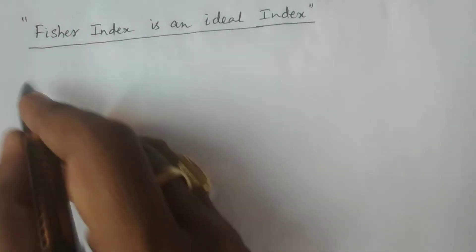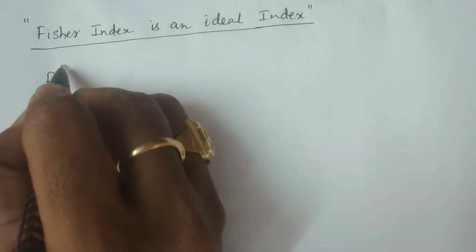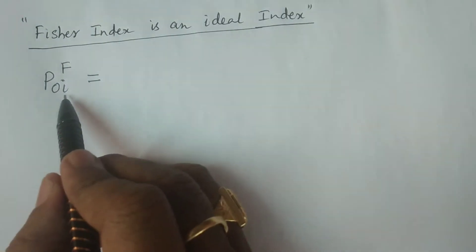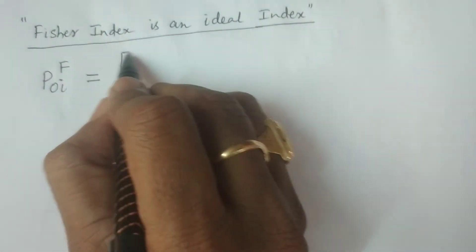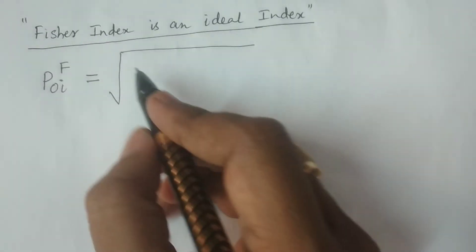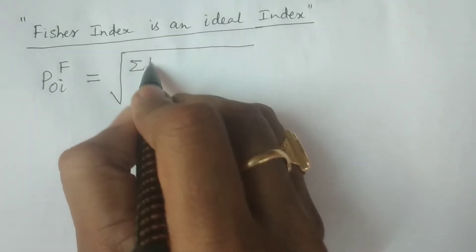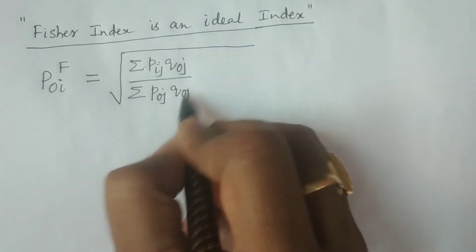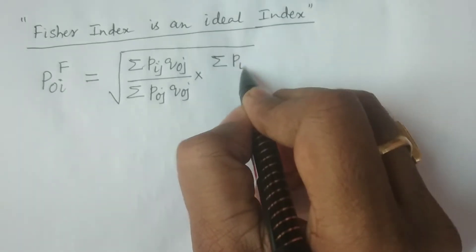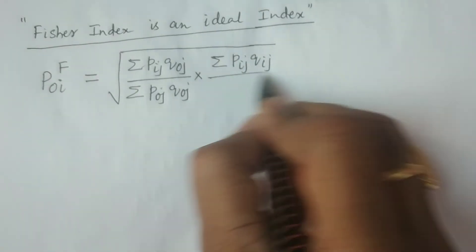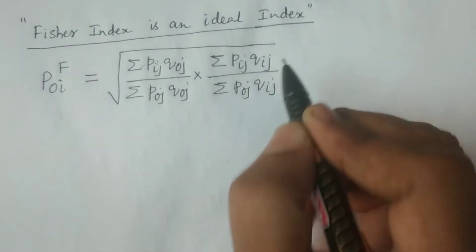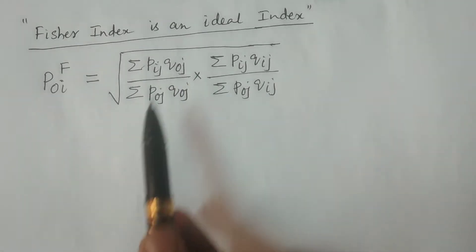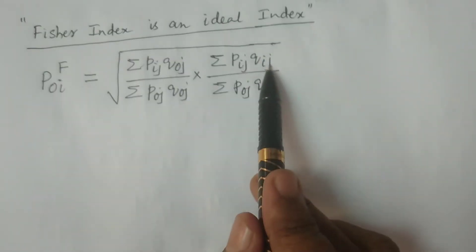Now let's look at the Fisher index formula. Write the Fisher index formula P₀ᵢ Fisher for the current time period i based on the base period 0. It is the geometric mean of Laspeyre and Paasche: the square root of [Σ Pᵢⱼ Q₀ⱼ / Σ P₀ⱼ Q₀ⱼ] multiplied by [Σ Pᵢⱼ Qᵢⱼ / Σ P₀ⱼ Qᵢⱼ].